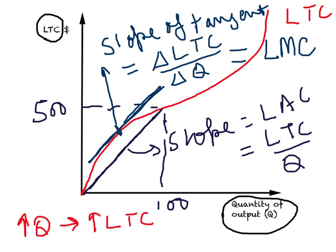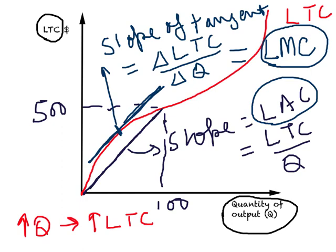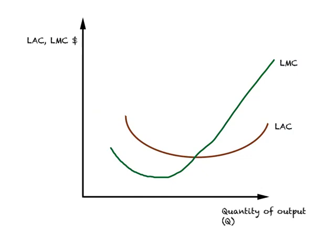This is how we derive long-run average cost and long-run marginal cost from the long-run total cost curve. LTC is the lowest total cost of producing each level of output in the most efficient way. On the vertical axis we have dollars showing LAC or LMC, and on the horizontal axis we have Q. Based on the relationship between marginal and average, we can draw both the long-run average cost curve and the long-run marginal cost curve.